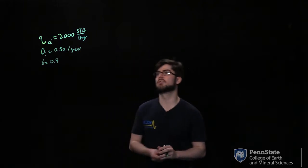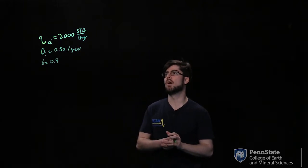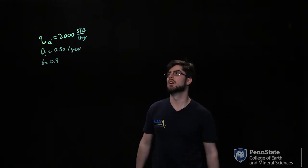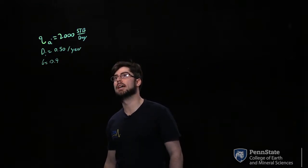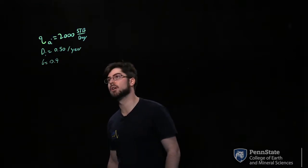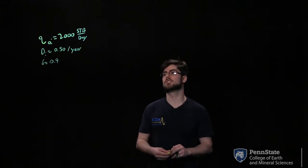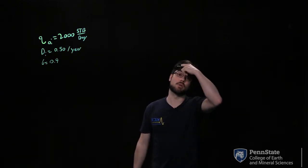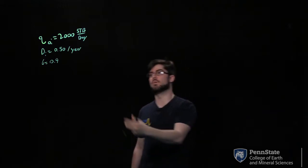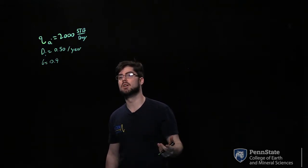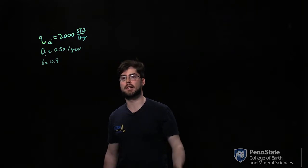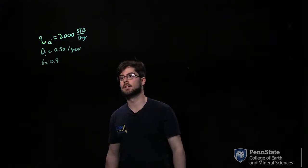We're going to have three parameters: QOI, which is your initial production of oil at 2,000 STB per day; a DI coefficient of 0.50 per year; and a B value of 0.9. This B value is really what differentiates the curves for exponential, harmonic, and hyperbolic decline.